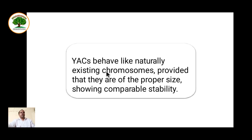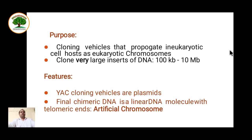YAC behaves like a naturally existing chromosome as every property of a chromosome is present, provided they are of proper size and show comparable stability. The purpose of YAC is that it is used as a cloning vehicle that propagates in eukaryotic cells as a eukaryotic chromosome, and it can clone very large inserts of DNA — from 100 kB to 10 MB of DNA.